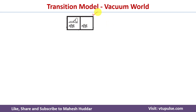Let's assume this is the initial state from where we want to start. In this case, the AI agent is present in location A. Location A is dirty as well as location B is dirty. The left location is A and the right one is B.